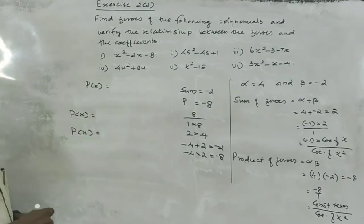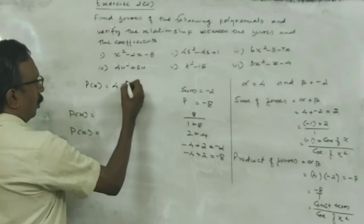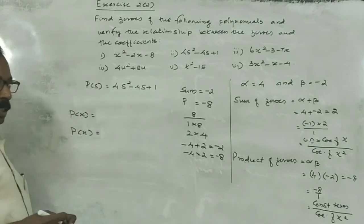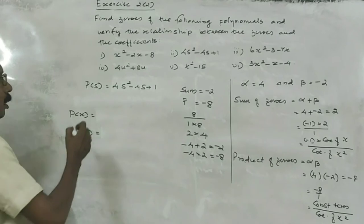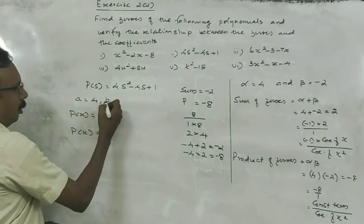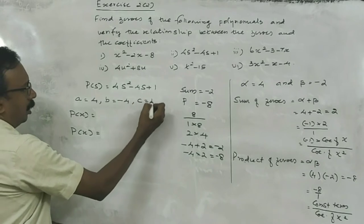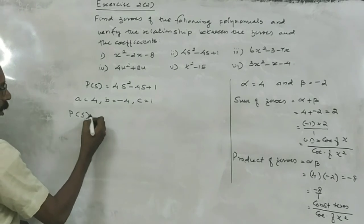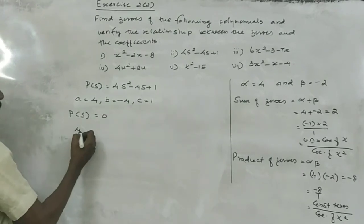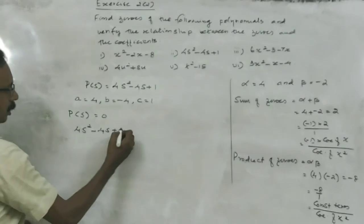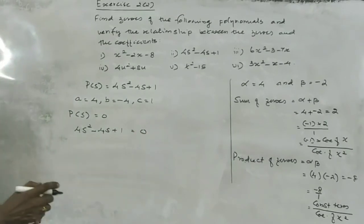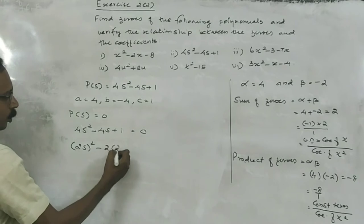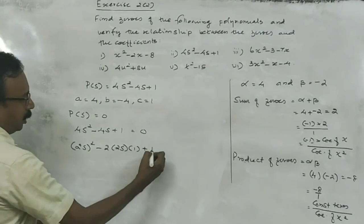Next question: 4s squared minus 4s plus 1. Here, A is equal to 4, B is equal to minus 4, C is equal to 1. To find the zero of this polynomial, put P of S equal to 0, that is 4S squared minus 4S plus 1 is equal to 0. Here it can be recognized as 2S squared minus 2 into 2S into 1 plus 1 squared.